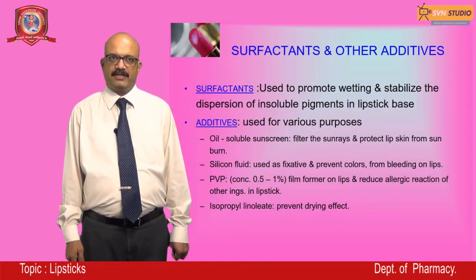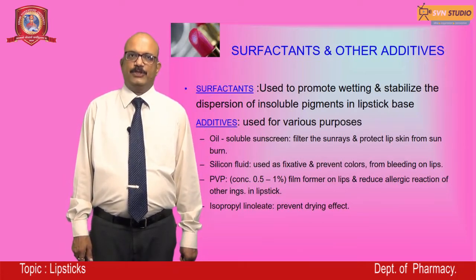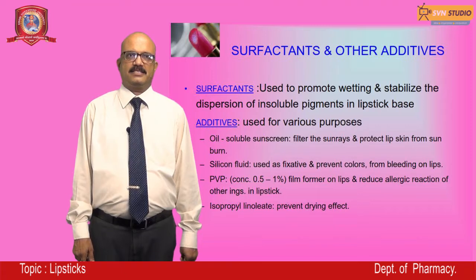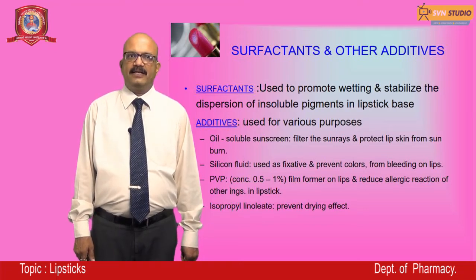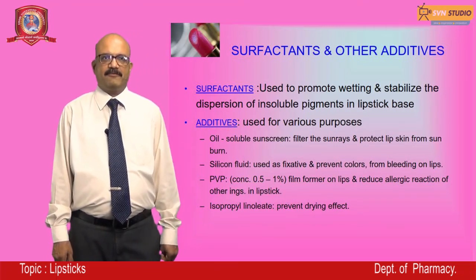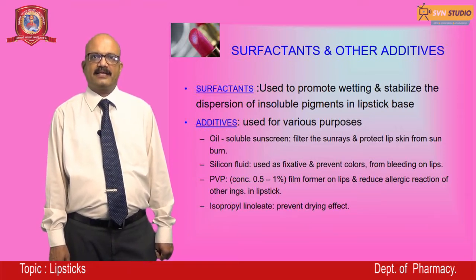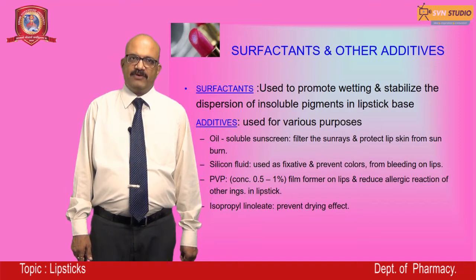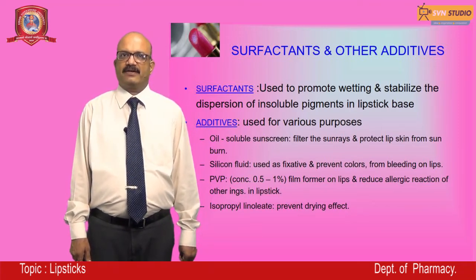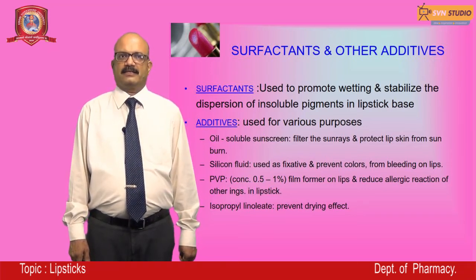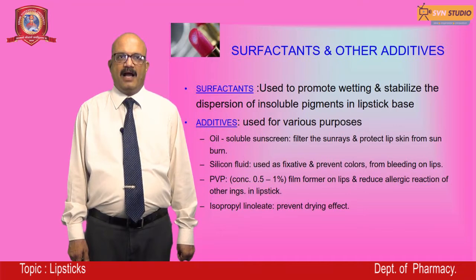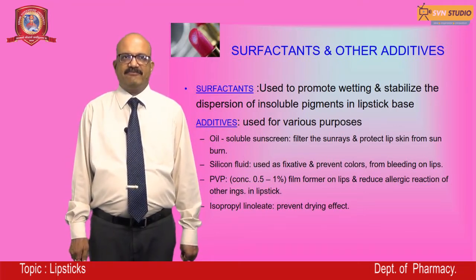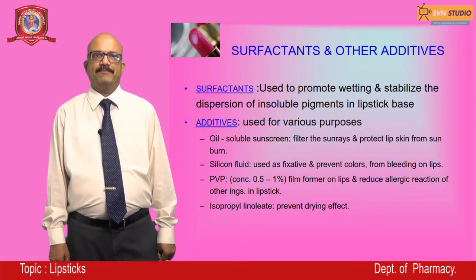Surfactants are generally used to promote wetting and to stabilize the dispersion of insoluble pigments in the lipstick base. Other additives include oil-soluble sunscreen to filter sun rays and protect lip skin from sunburn. Silicone fluid can also be used as a fixative to prevent colors from bleeding on the lips. Polyvinylpyrrolidone at 0.5 to 1 percent can be used as a film former on the lips to reduce allergic reactions. Isopropyl linoleate prevents the drying effect of the product.